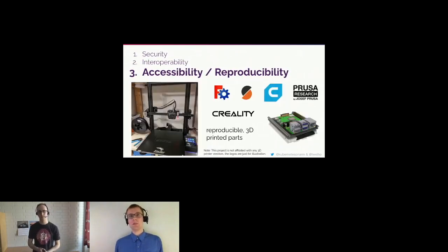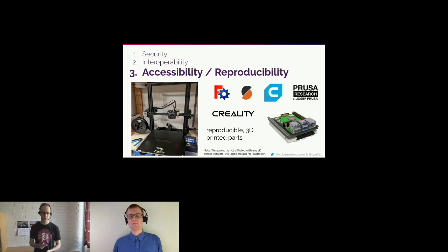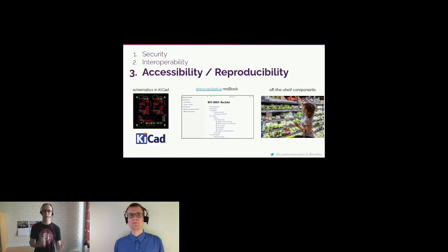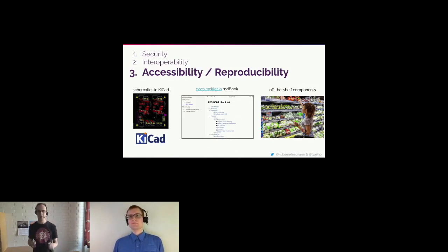In addition to public availability, the Racklet hardware design itself will be as accessible and reproducible as possible. We'll leverage 3D printing and an open-source CAD workflow for all structural components, and schematics will be made open hardware in KiCad. We also have markdown-based online docs at racklet.io — a work in progress. Everything else will be off-the-shelf components, meaning you can buy them in your local web store.